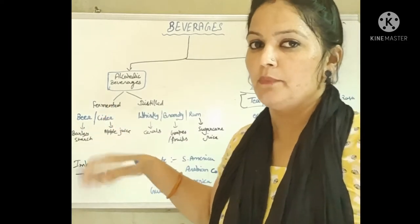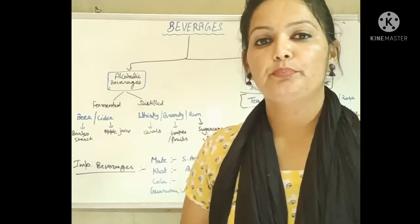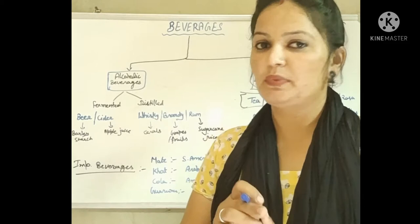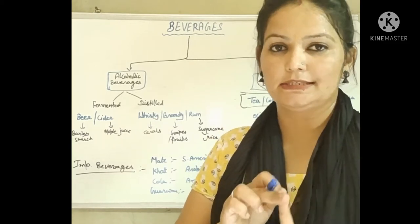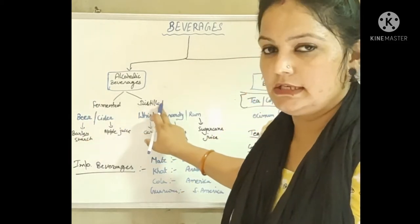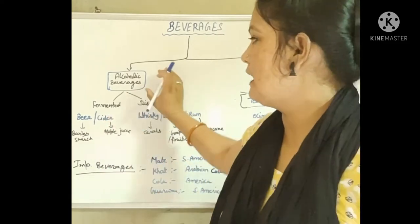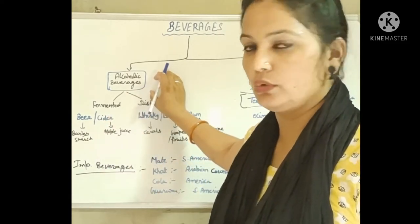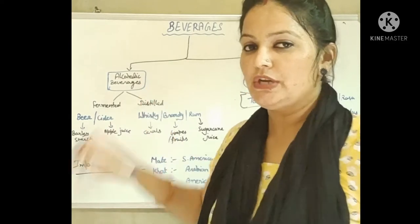First, we talk about alcoholic beverages. Alcoholic beverages — it means alcohol is present in them. These can be made through two processes: one is fermentation and the second is distillation. So alcoholic beverages are formed through fermentation or distillation.